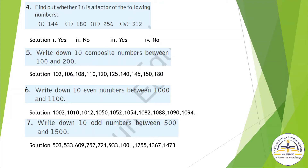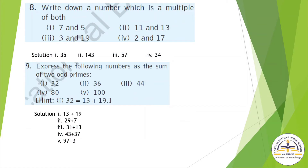Question Number 5: Write down 10 composite numbers between 100 and 200. Here you have to write 10 composite numbers. Question Number 6: Write down 10 even numbers between 1000 and 1100. Question Number 7: Write 10 odd numbers between 500 and 1500. Question Number 8: Write down a number which is a multiple of both — first question, 7 and 5. When we multiply both, we get 35, so 35 is a multiple of 7 and 5. For 11 and 13, multiply both numbers to get your multiple.